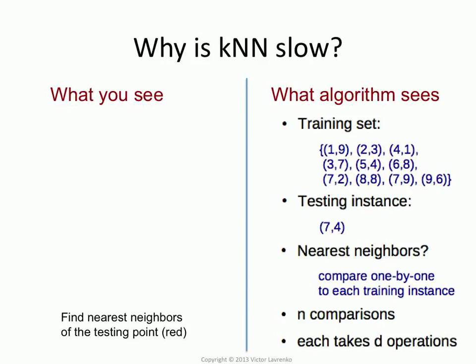That is expensive, because for a data set of size n, it will require n computations of distance, and each distance computation is going to take d operations, because that's how many dimensions you have. So your complexity is n times d, and that is the testing time complexity, not training. KNN has zero training time complexity, but it's very expensive at testing time, especially if you have lots of data.